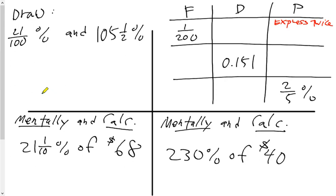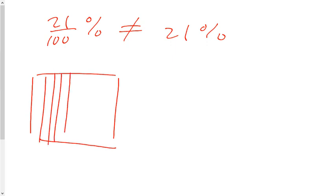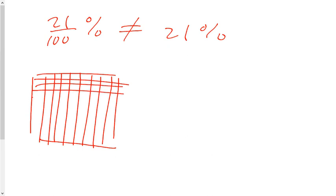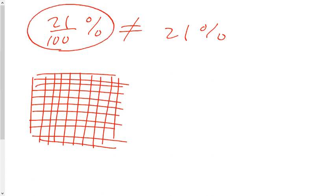The first question says draw 21 over 100% and 105.5%. So we're going to draw 21 over 100%. Now the first thing I want you to know is that this is not the same thing as 21%. When we talk about 21 hundredths of a percent, we are talking about if this was 100 squares, then we are looking at less than 1%.